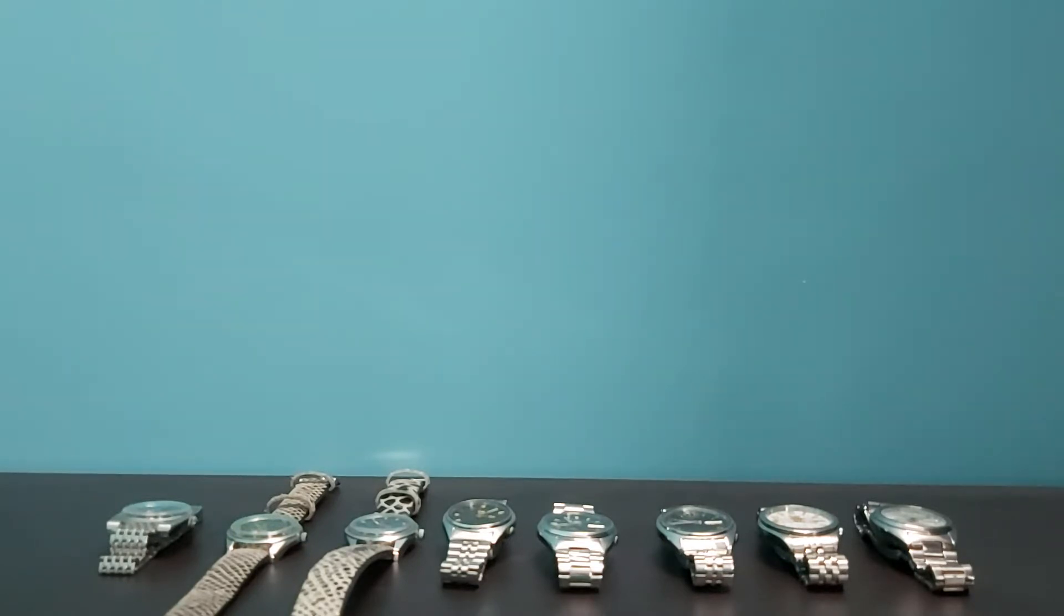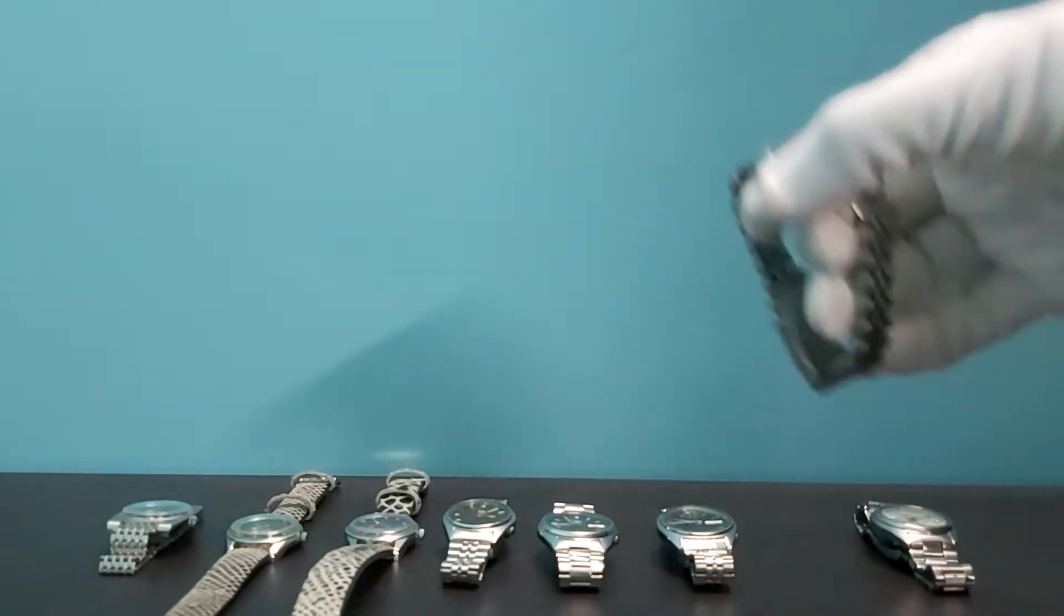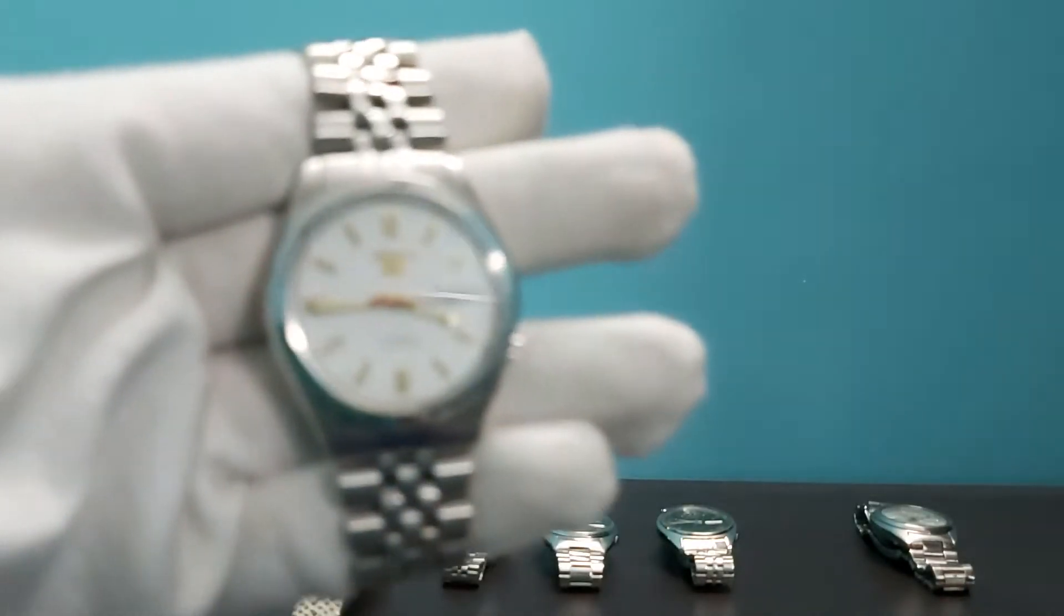So let's get into it. One by one I will show you the details and also the model number of these watches. You can look up on Google also for this. So first is this Seiko automatic watch on a Jubilee bracelet.